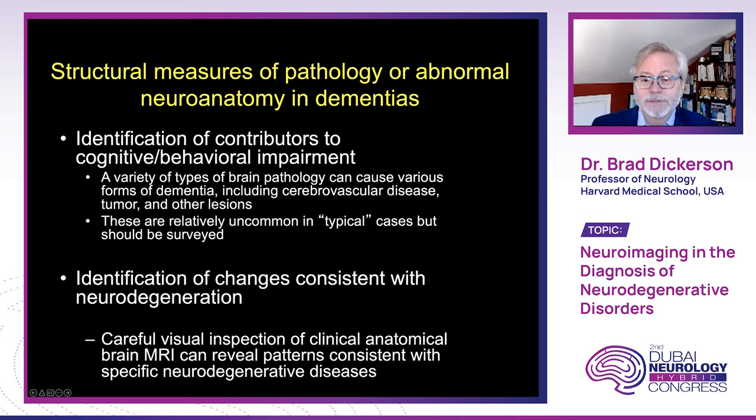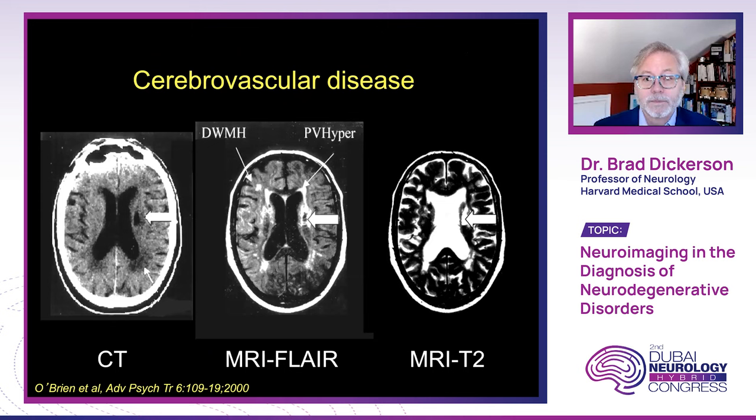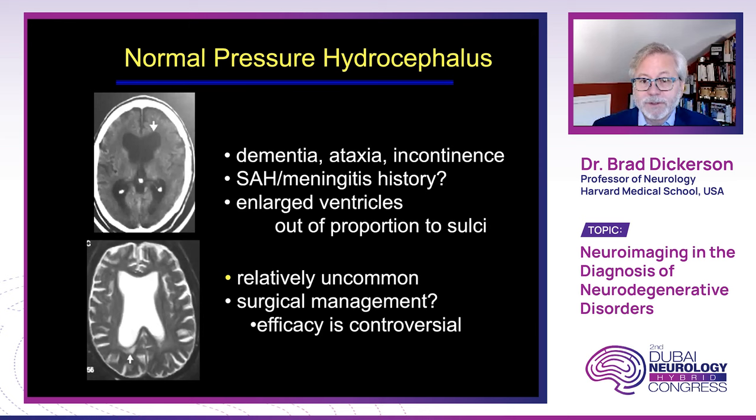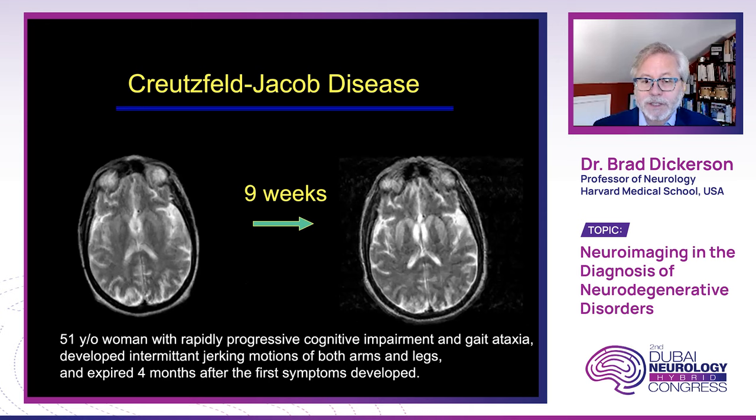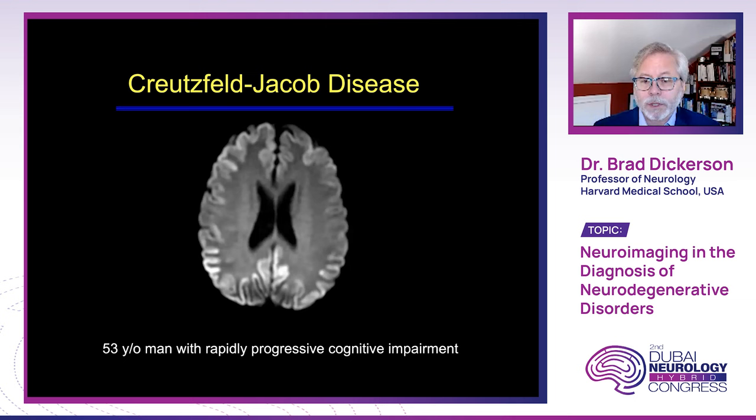Structural imaging can also identify changes consistent with specific types of neurodegenerative disease. Cerebrovascular disease is a very common cause of dementia and is often obvious on CT or MRI. Normal pressure hydrocephalus should be considered when people have ventricular enlargement out of proportion to sulcal atrophy. And diseases like Creutzfeldt-Jakob disease have specific signatures of hyperintensity on diffusion-weighted imaging, such as the cortical ribboning pattern.